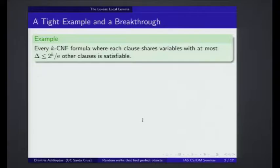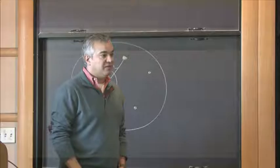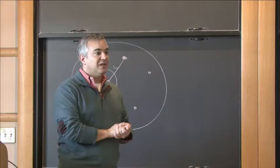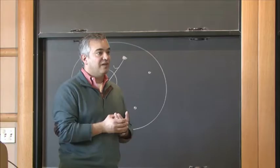Here's an example that shows the power of the LLL: every k-CNF formula where each clause shares variables with at most 2^k divided by Euler's constant other clauses is satisfiable. You can prove this by the LLL in a very straightforward way. You take the uniform measure on the binary cube. The events are the dissatisfactions of the different clauses. Observe that if two clauses don't share any variables, then they're clearly independent from one another, so the notion of conflict is captured by the notion of sharing and, in fact, disagreeing on a variable.